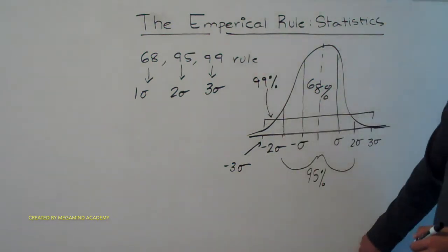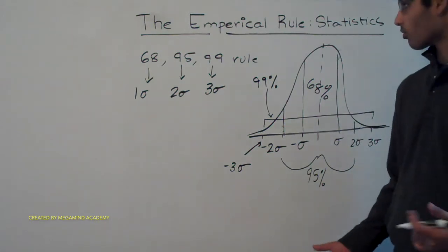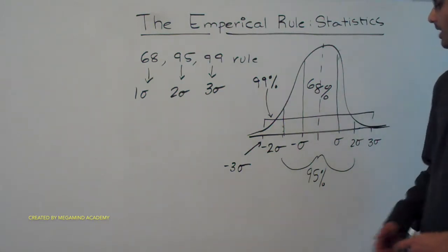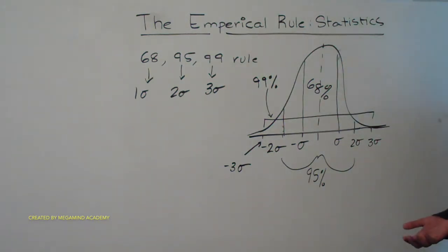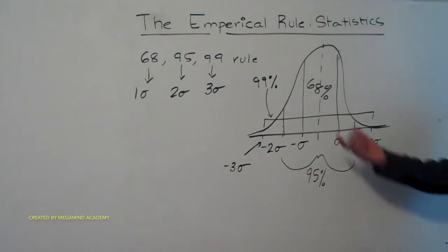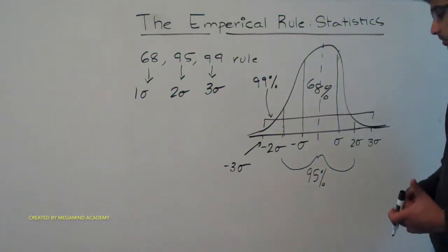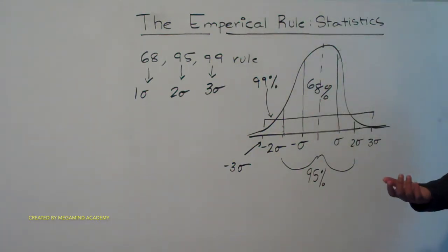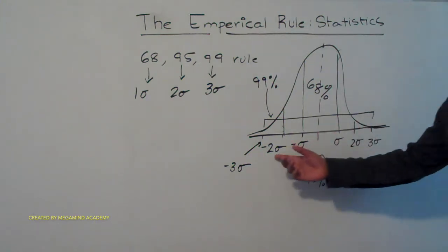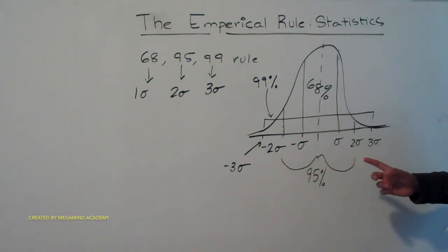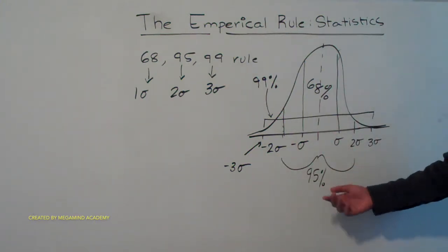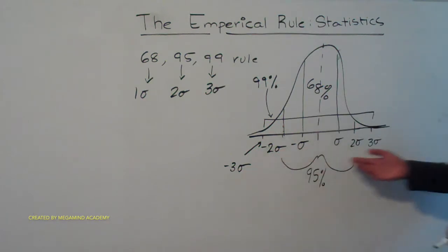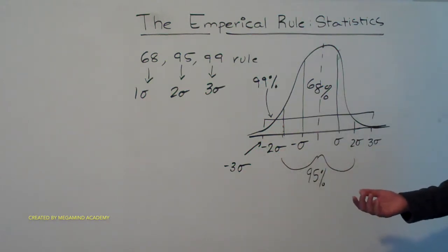So this is basically all the empirical rule tells us. It tells us within one standard deviation of the mean we have 68% of the data, or 68% of the area under the curve. Within two standard deviations, we have 95%. And within three standard deviations, we have 99%.